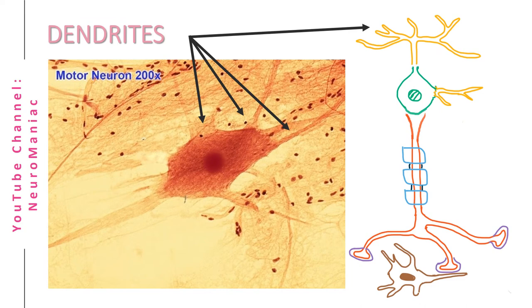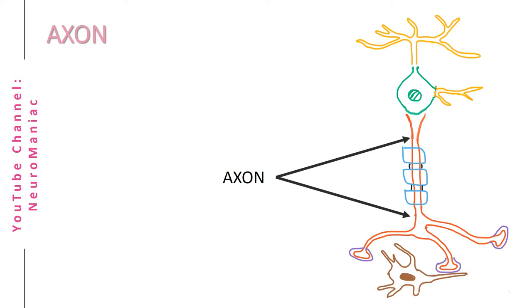Dendrites are branch projections of neurons. They receive electrical impulses known as action potentials and direct them towards the soma. Axons, on the other hand, are neuronal processes that convey action potentials away from the soma. These signals originate from...